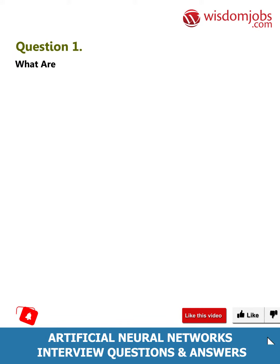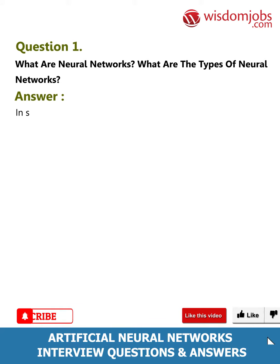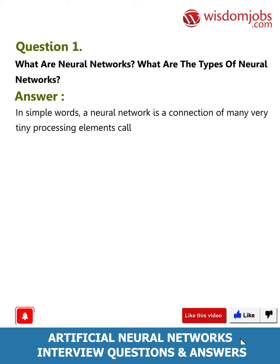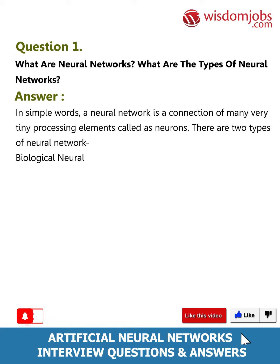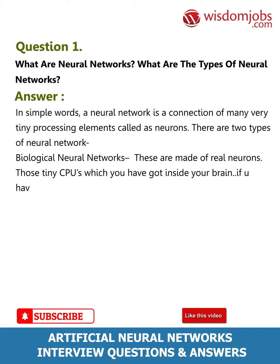Question 1: What are neural networks and what are the types of neural networks? In simple words, a neural network is a connection of many very tiny processing elements called neurons. There are two types: biological neural networks, which are made of real neurons — those tiny CPUs inside your brain. Neurons actually make up the whole nervous system.